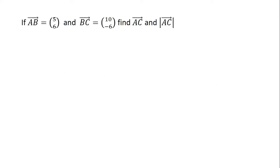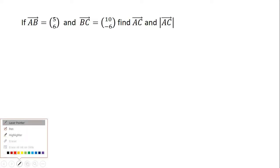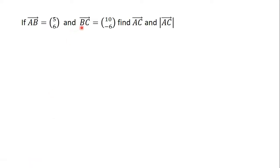The first question for this video is: if vector AB has the components 5, 6 and vector BC has the components 10, negative 6, find vector AC and the magnitude of vector AC.